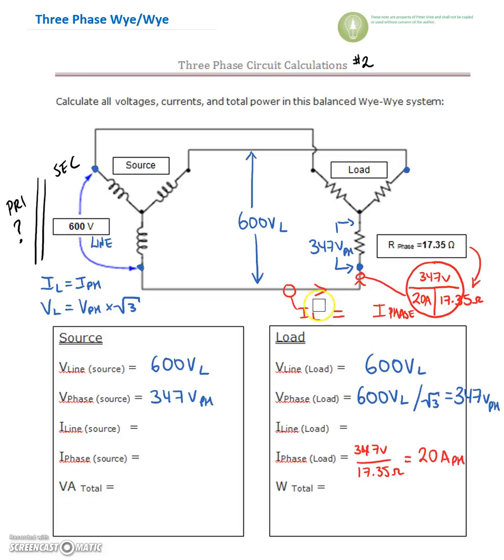We can see that there's only one path for that current to flow. So whatever is flowing on the inside of the Y is also going to be flowing on the outside of the Y. So we know that I line is equal to I phase, and so our line current is also going to be equal to 20 amps, and that was the same as our phase current.